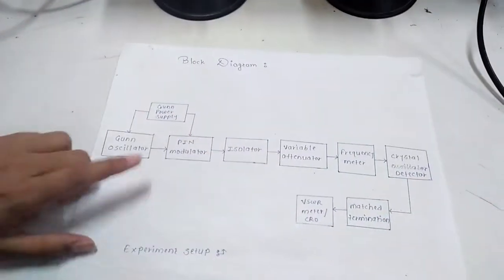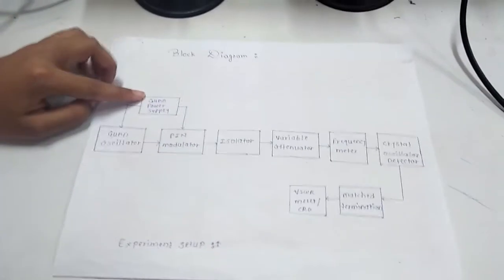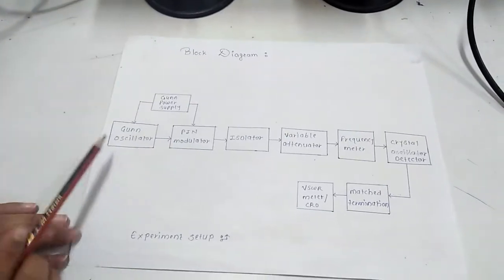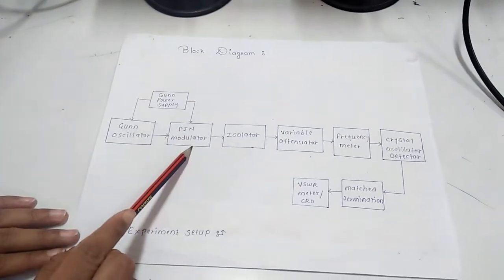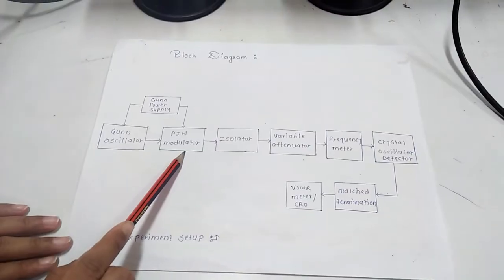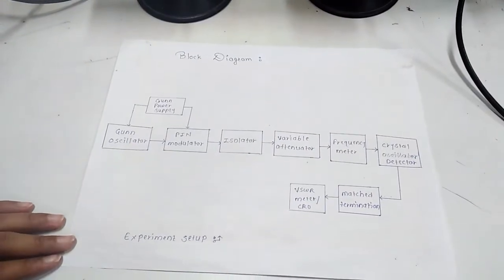The block diagram for obtaining VI characteristics of Gunn diode is as following. Gunn power supply is used to give power supply to Gunn oscillator and PIN modulator. Gunn diode was invented by JB Gunn.